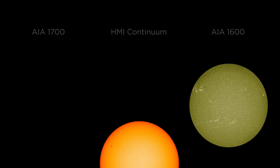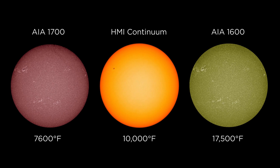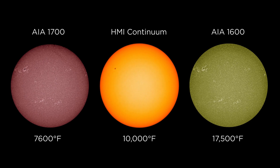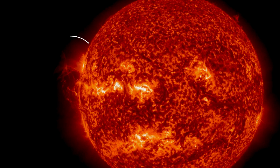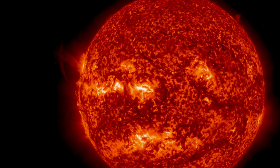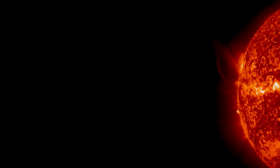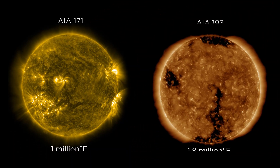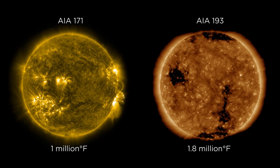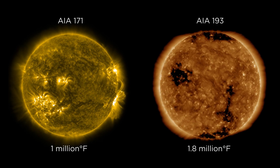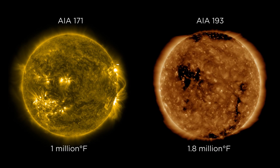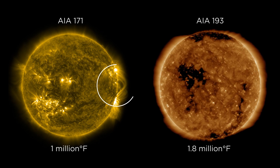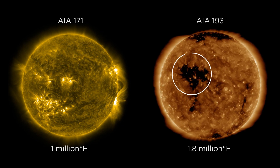These wavelengths show us the sun's upper atmospheric layers at different temperatures. This wavelength highlights filaments and prominences. These wavelengths highlight the corona, the sun's atmosphere that is much hotter than the sun's surface, and shows features like coronal loops and coronal holes.